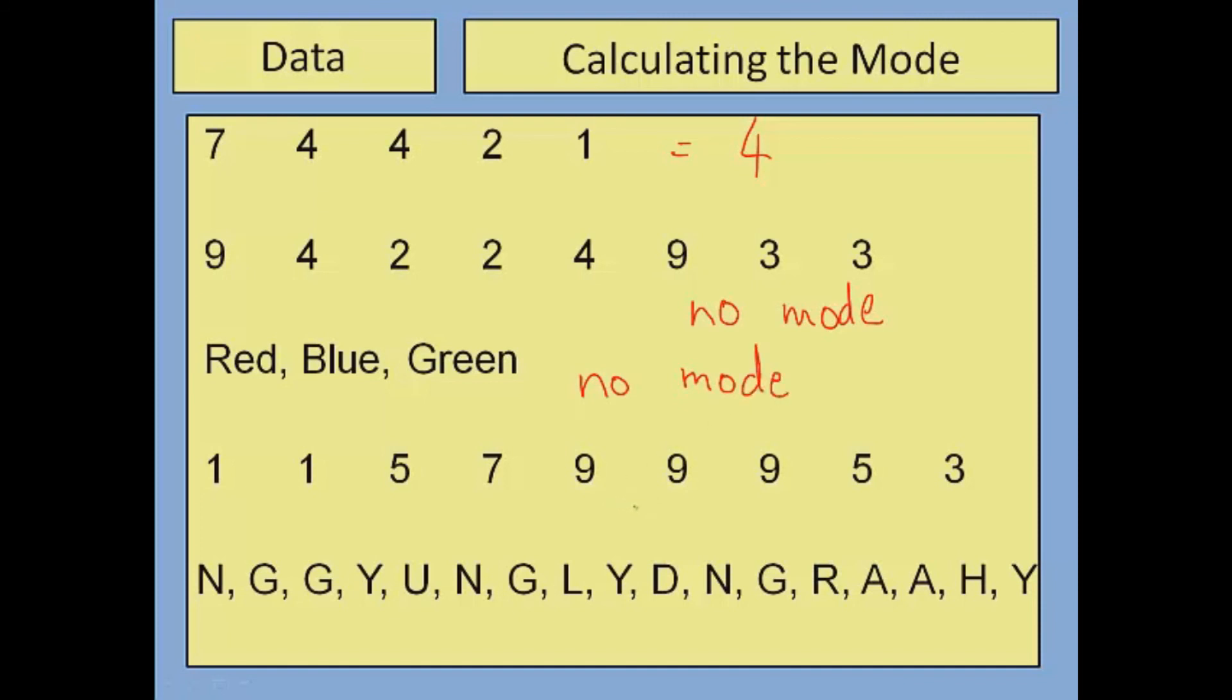In this next one, nine appears the most, so we'd say the mode equals nine. It appears three times whereas the other numbers—five appears twice, one appears twice, and there's one seven and one three.